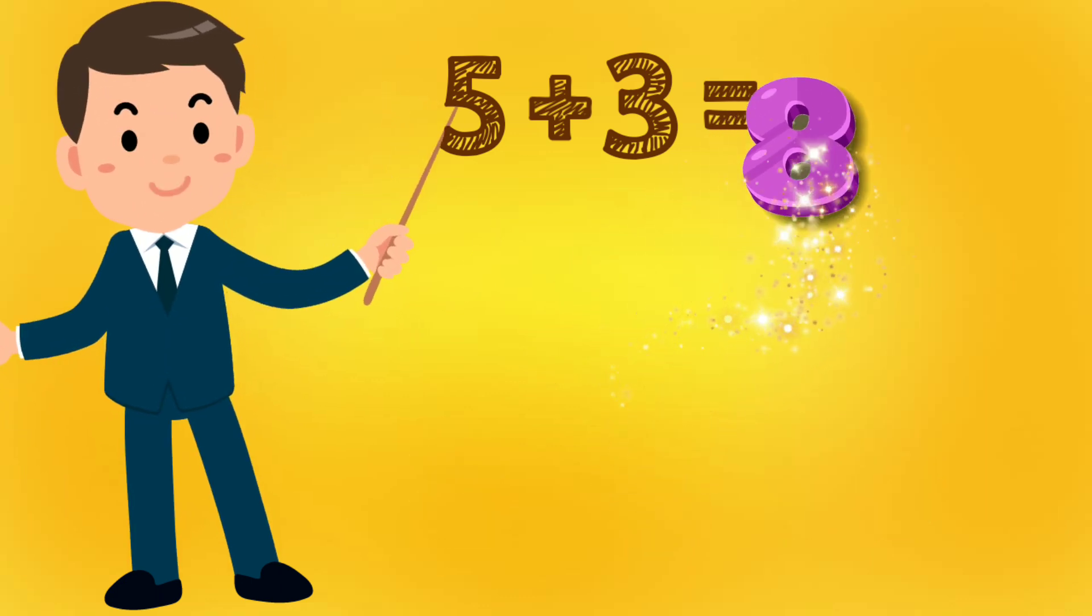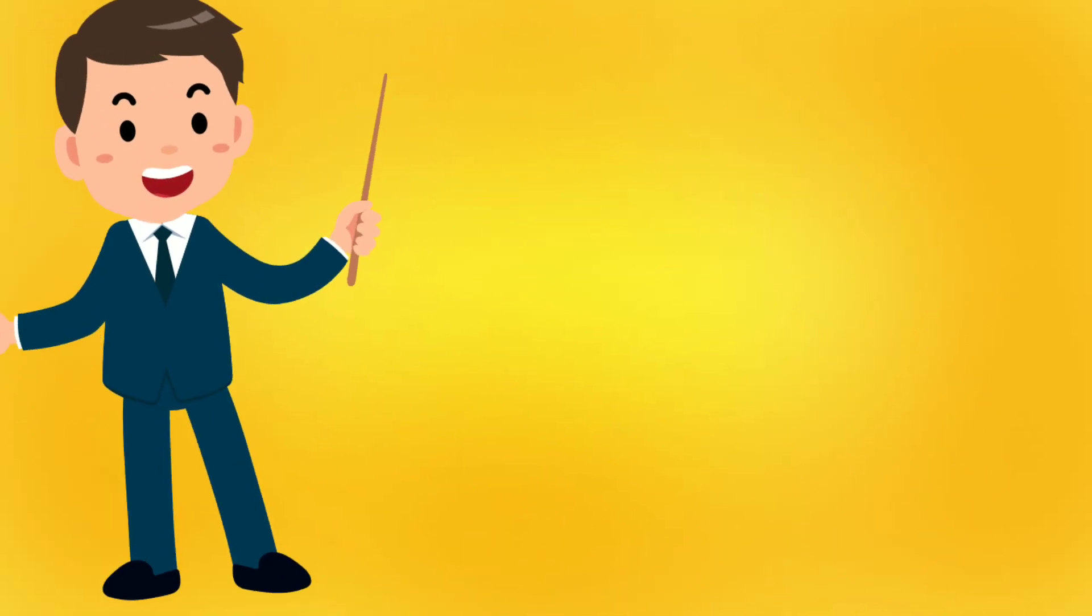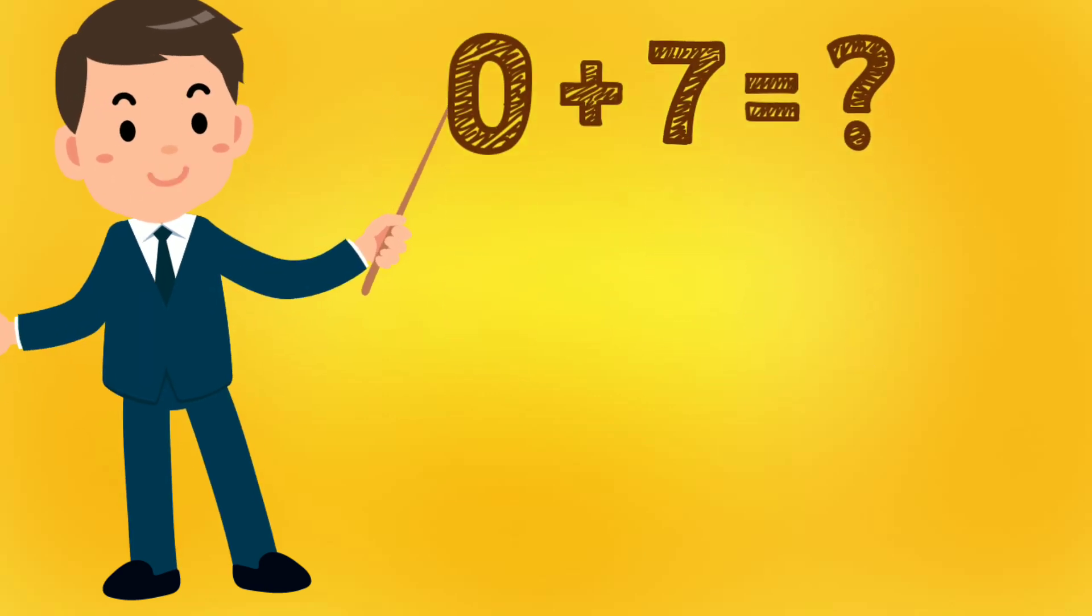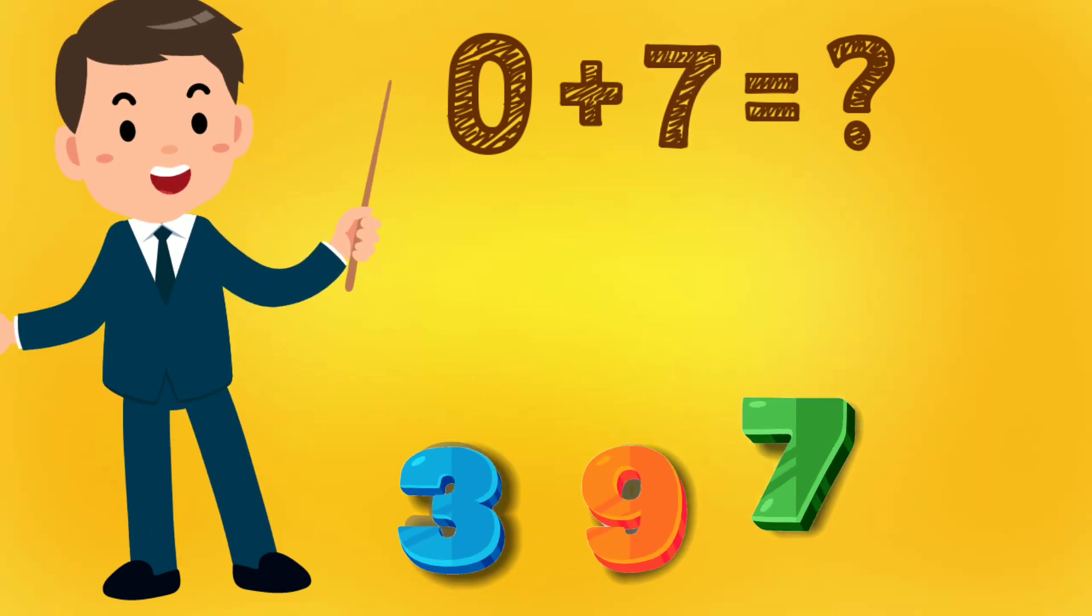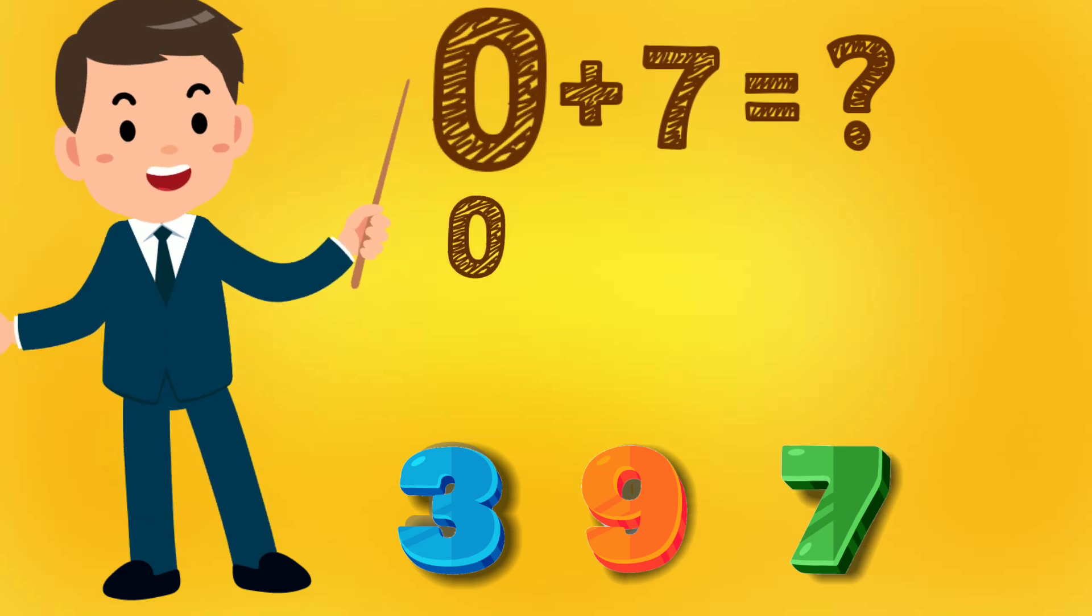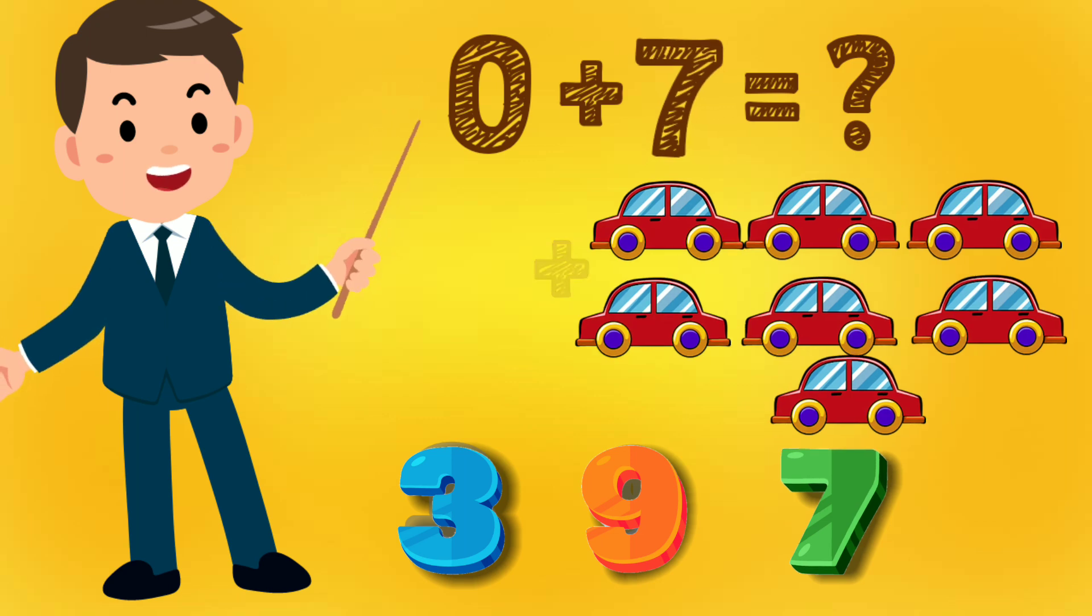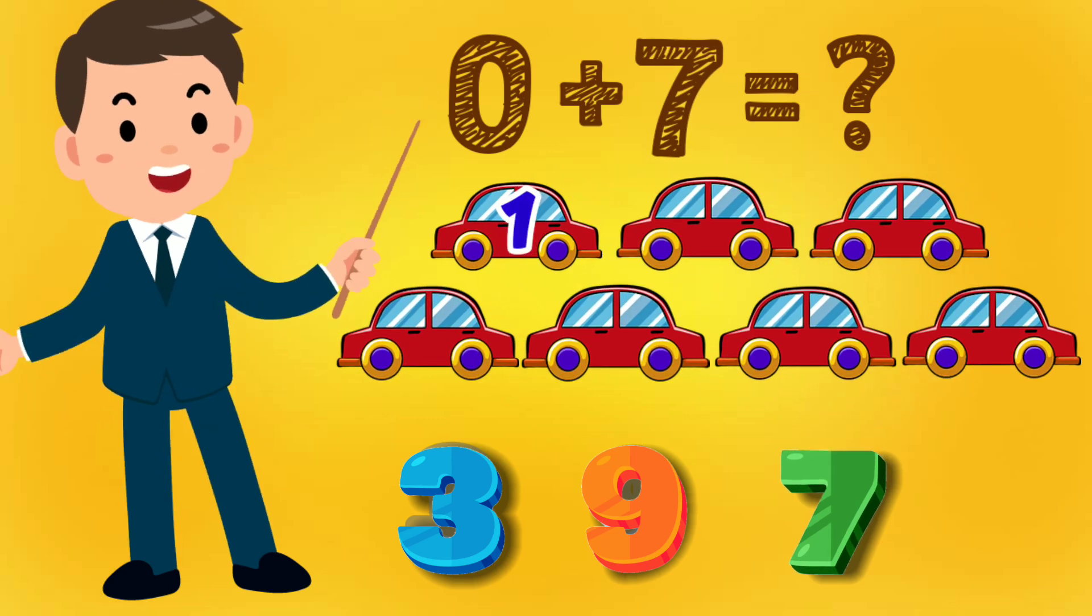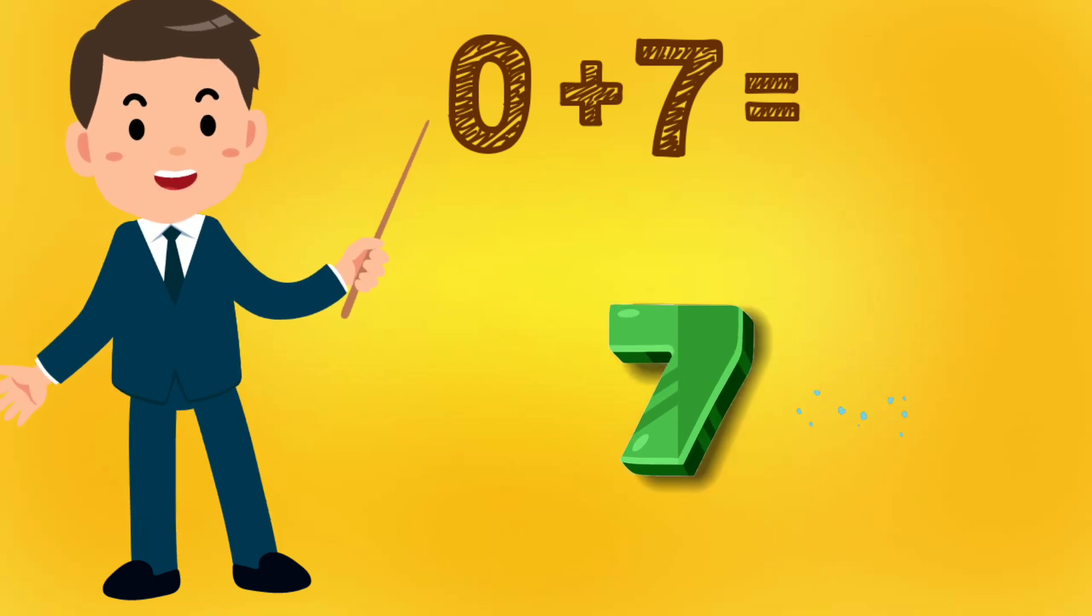Now let's solve another sum. Zero plus seven equals how much? Is it three, is it nine, or is it seven? Let's find out. Zero means nothing plus seven cars. Now let's count them: one, two, three, four, five, six, seven. The answer is seven.